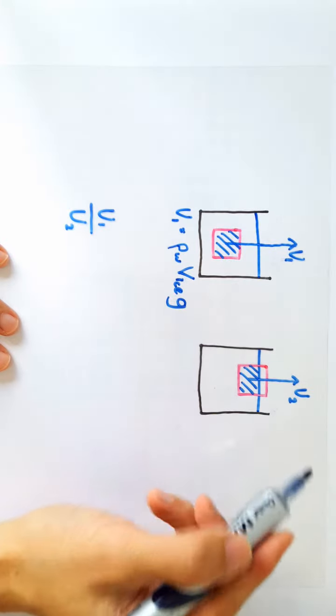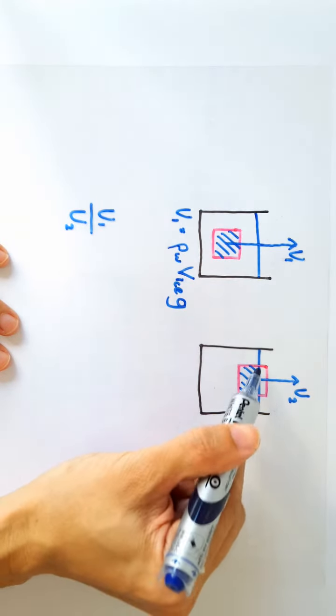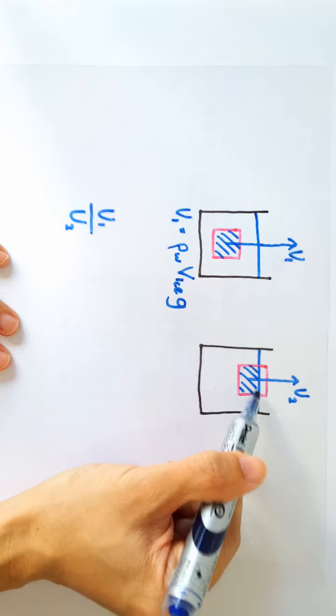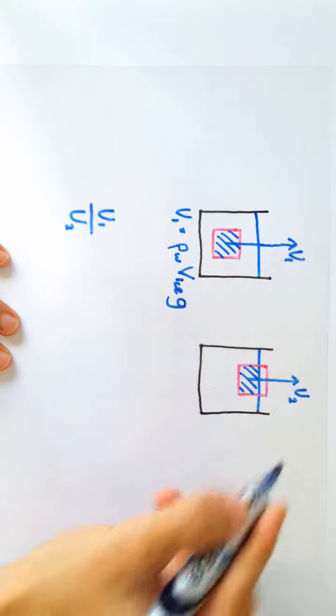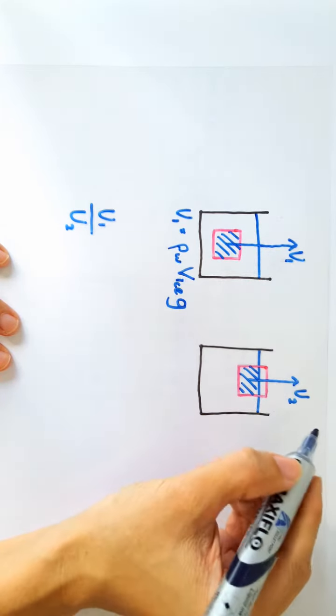Now in the second situation, the upthrust is equal to the weight of this smaller amount of fluid here. But since the ice block is floating now,